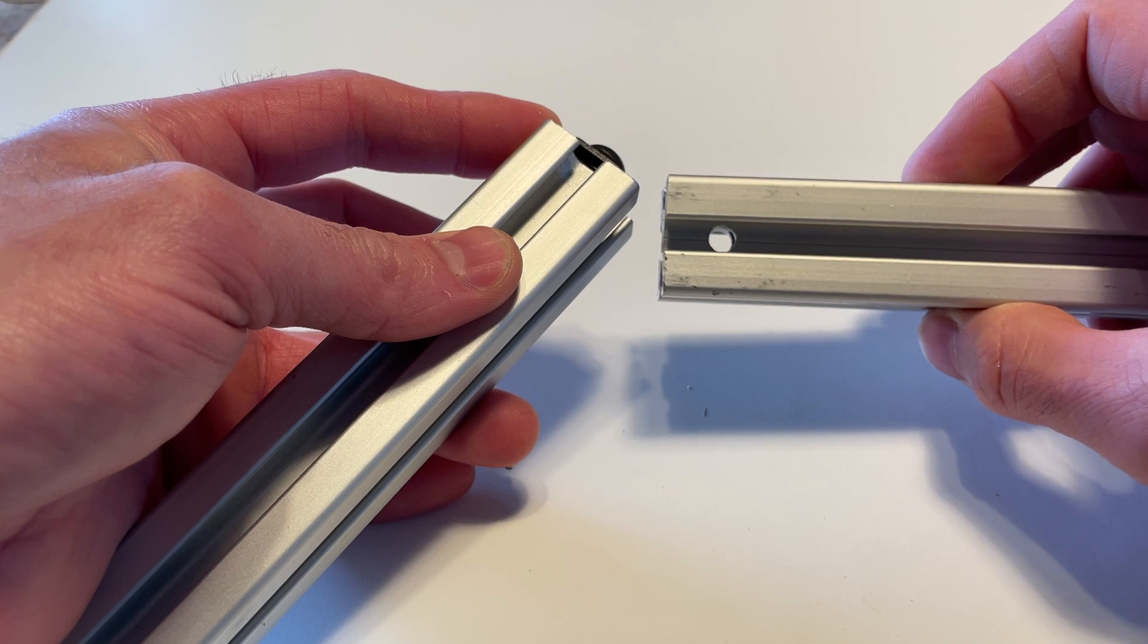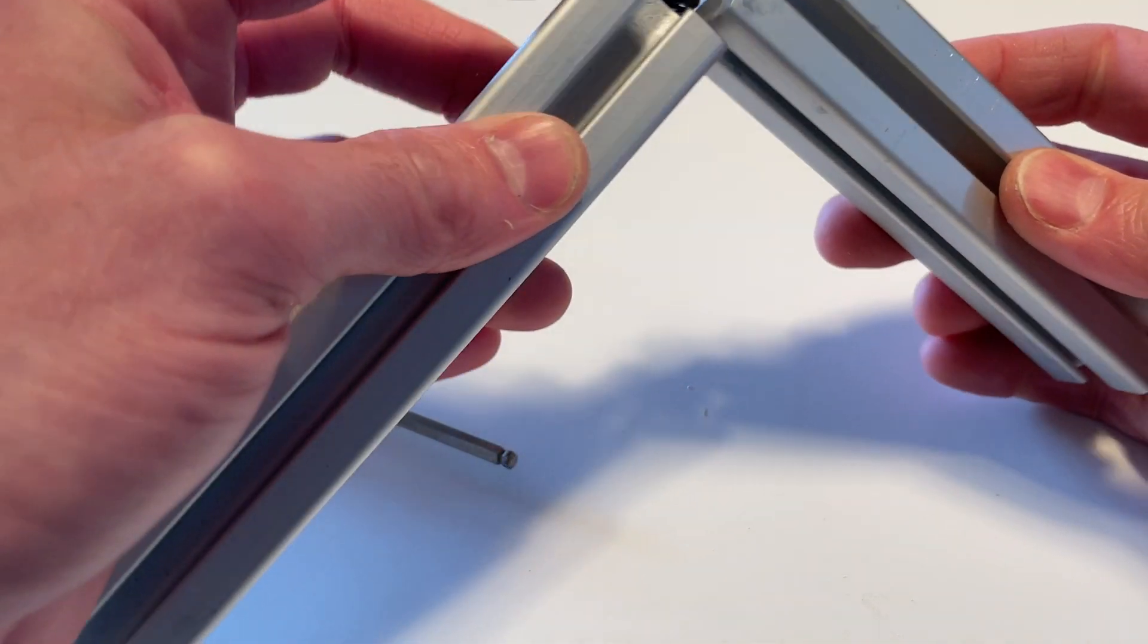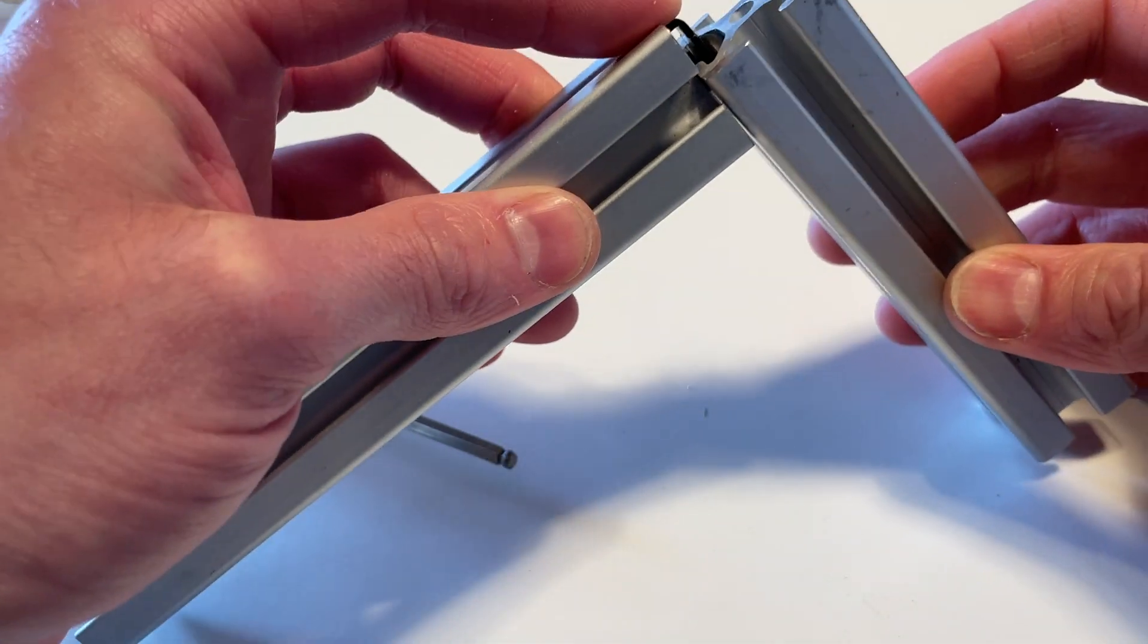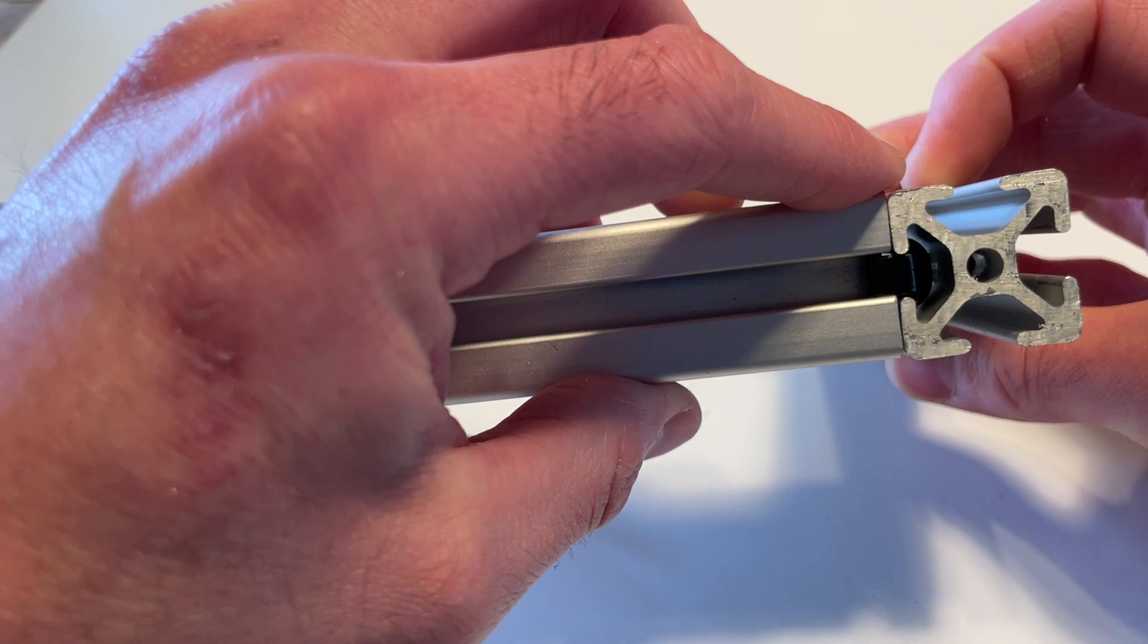Find the other piece you're attaching. Find the hole - that's the access hole for the screw head. Take this piece and slide the head of the screw and that tab into the channel like so.